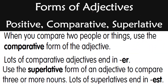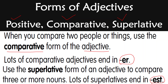Let's learn forms of adjectives — this is a very important part. There are three forms of adjectives: positive form, comparative form and superlative form. When you compare two people or things, use the comparative form of the adjective. Lots of comparative adjectives end in ER. Use the superlative form of an adjective to compare three or more nouns — lots of superlatives end in EST. So keep it in mind: in the comparative form you will see ER at the end, and in the superlative form you will see EST at the end.